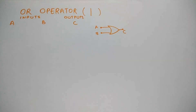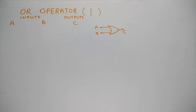You can see the symbol in the bracket of the OR operator. This symbol is used in embedded programming, similarly to the AND operator. There are two inputs and one output. The condition of the OR operator is: if both inputs are low then and only then the output is low, else the output is high.